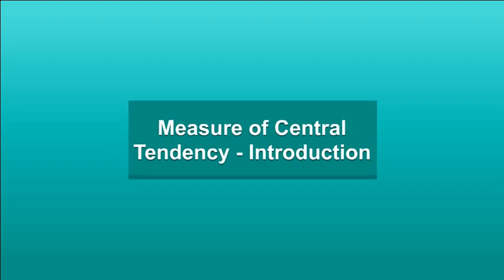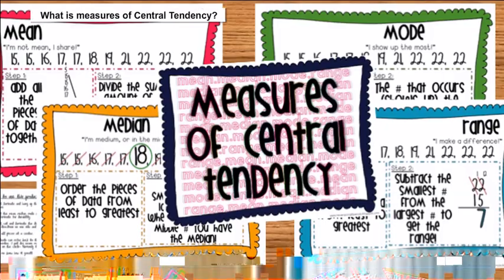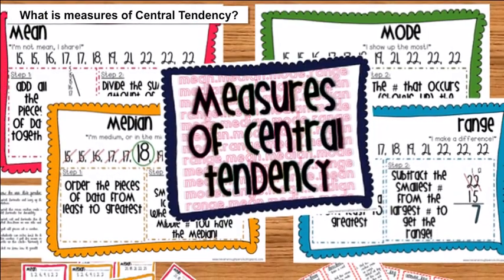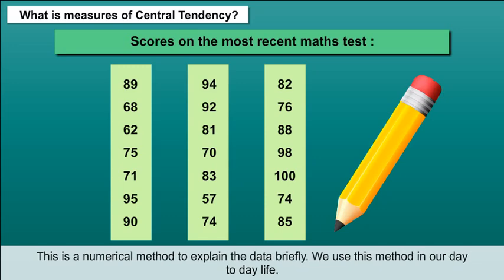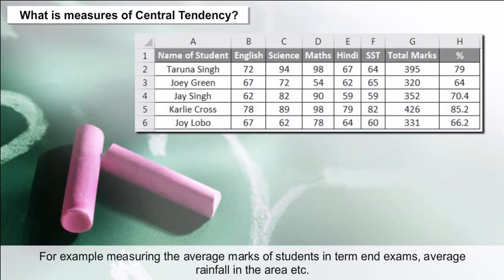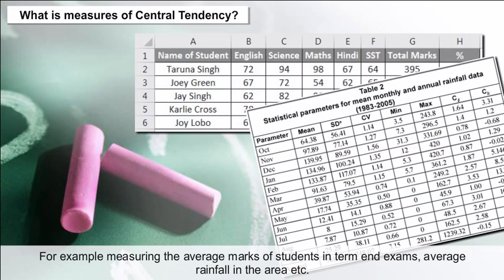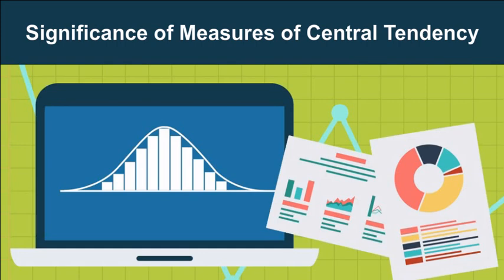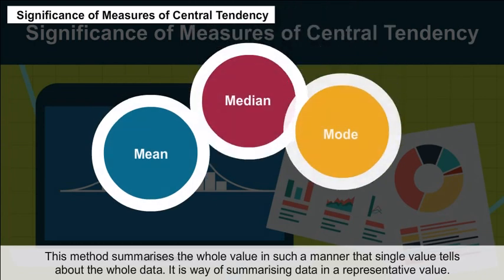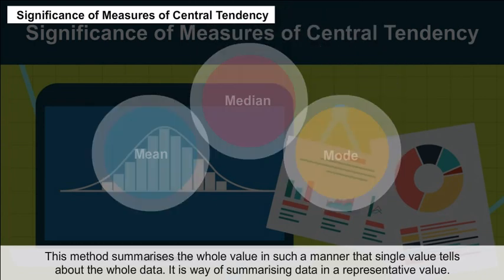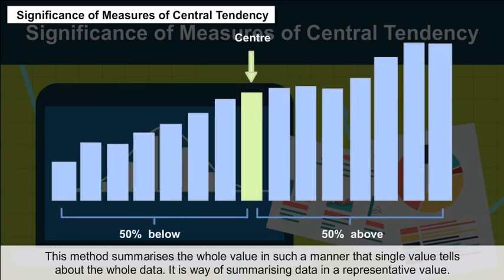Measures of Central Tendency — Introduction. Measures of central tendency is a numerical method to explain data briefly. We use this method in our day-to-day life; for example, measuring the average marks of students in exams or average rainfall in an area. This method summarizes the whole data in such a manner that a single value tells about the entire dataset.